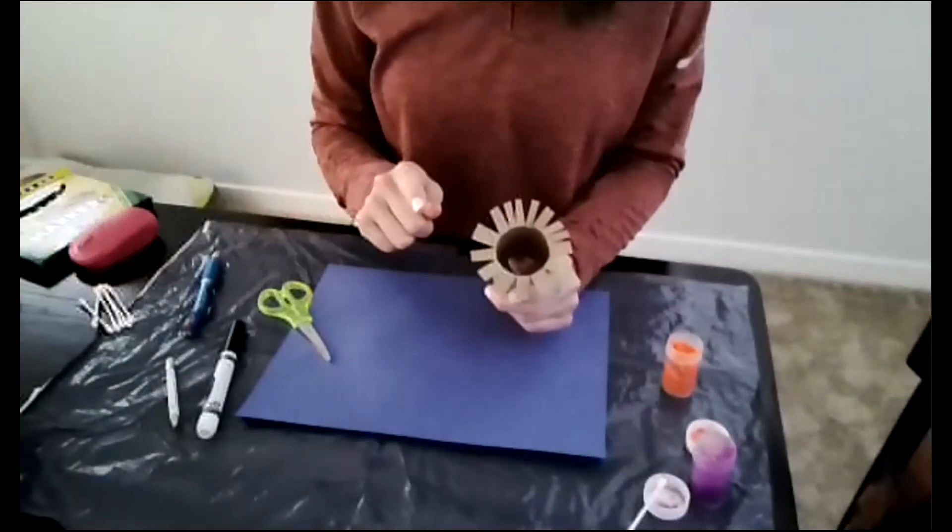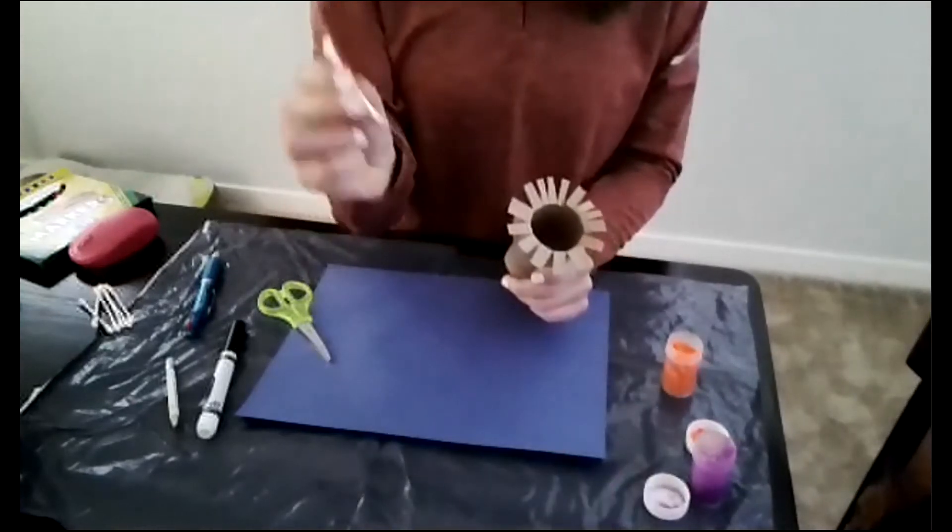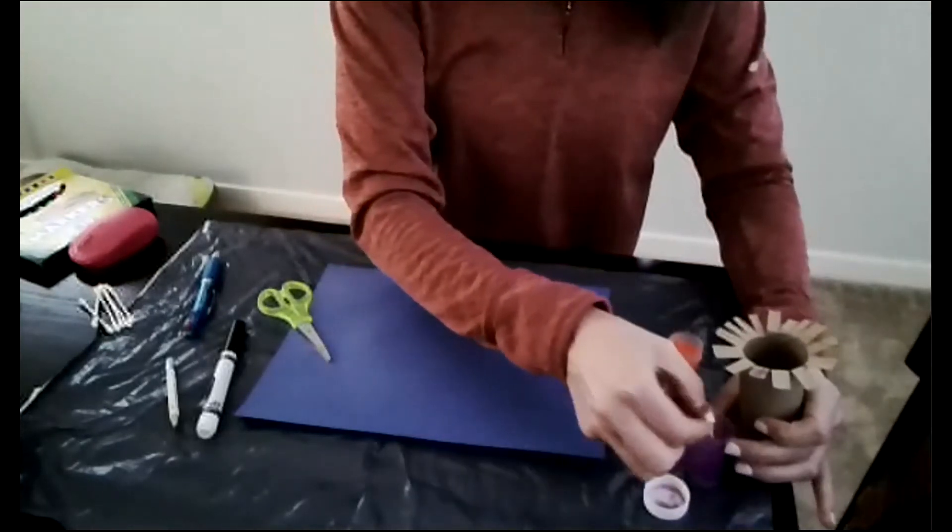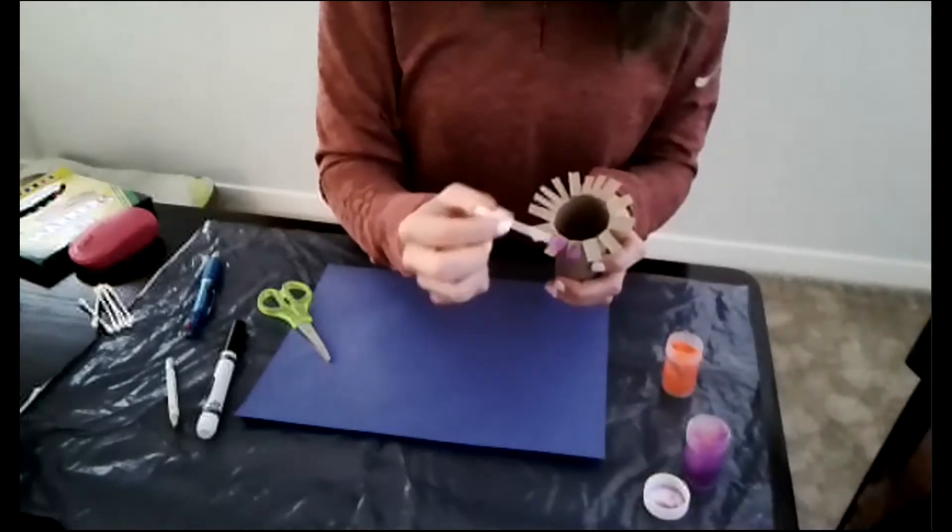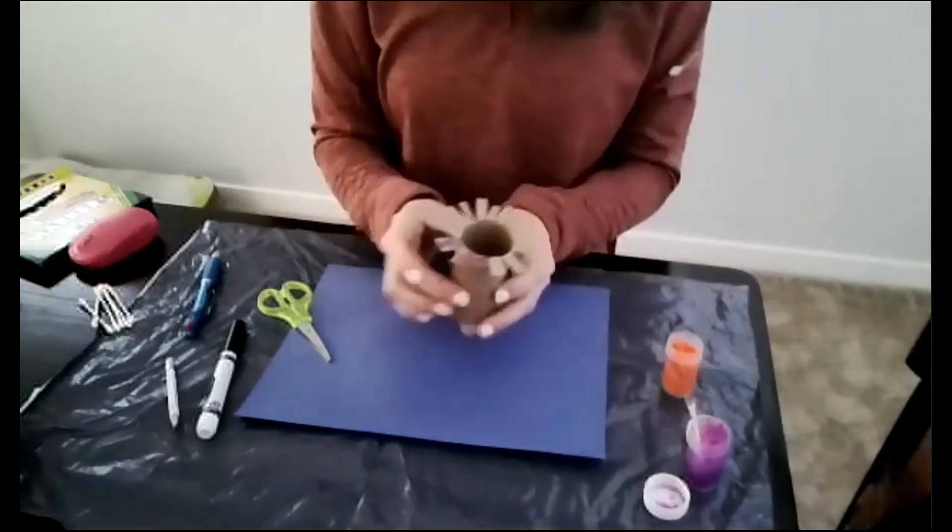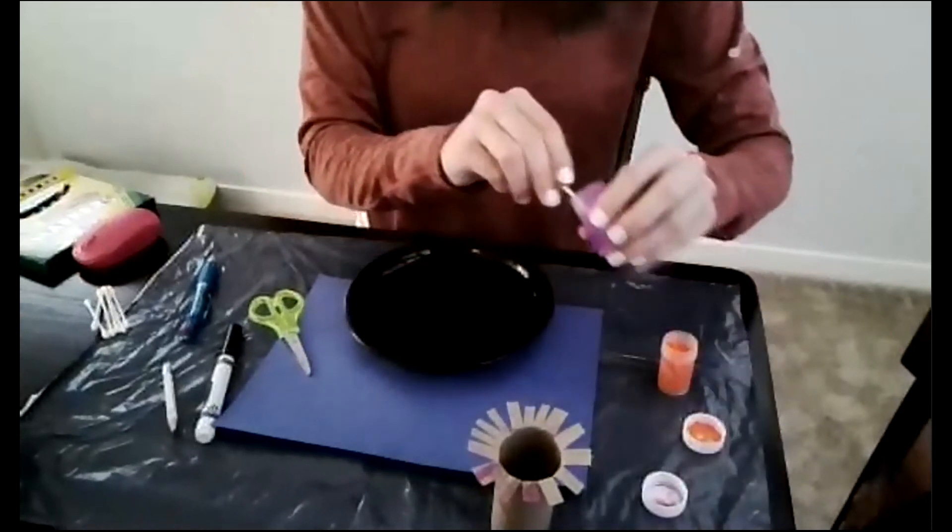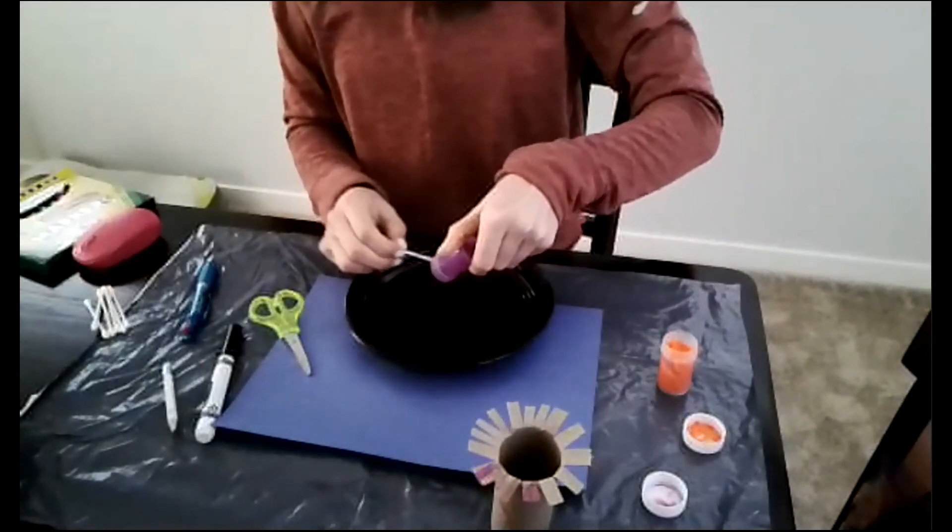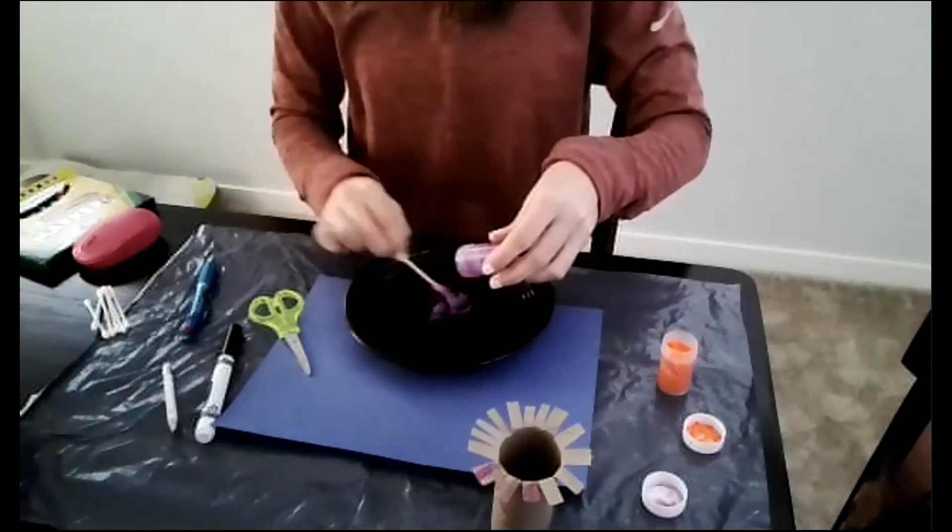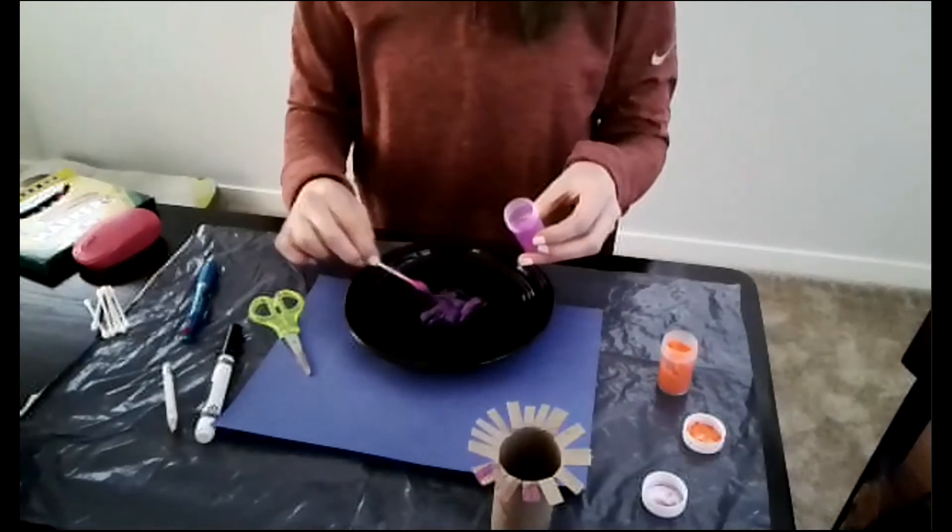Then two options for how you're going to get your paint onto your stamp. You can either use your q-tip to paint each individual flower petal but be generous here because you want the paint to come off onto your paper. Or you can take your paint and put it onto a plate or a lid. Something where you can really dump it out. And then just dip your stamp into the paint.